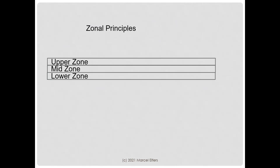The significance of it lies in the symbolism. In the upper zone, that is where our imagination, thought process, and moral principles reside — addressing our personal value system. The lower zone is where our physical imperatives reside: our physical needs, sexual needs, material needs — these type of things — and we can see that as desire. The mid zone is the reality zone, the here and now, where we are right now. The mid zone mediates between the upper and the lower zone.